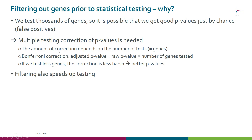In the context of single cell RNA-seq, Seurat uses the Bonferroni correction, where you simply multiply the raw p-value by the number of genes tested. Since we want small p-values, we want to reduce this multiplier, because multiplying by a large number will make the p-value worse. We can achieve this by testing fewer genes — and of course, filtering also speeds up testing.